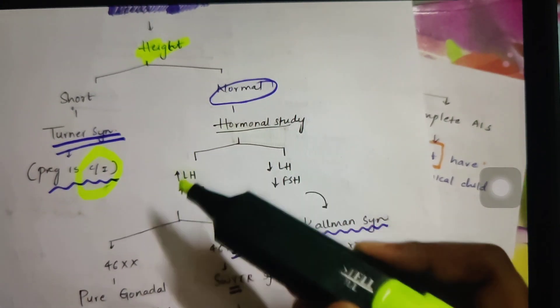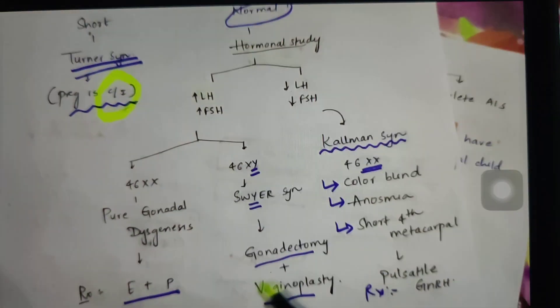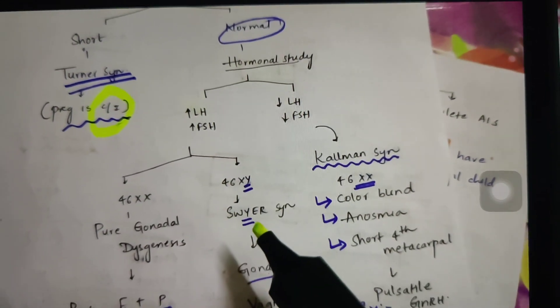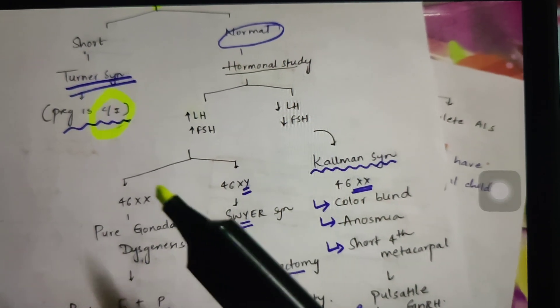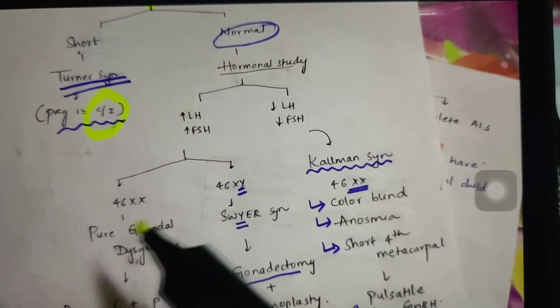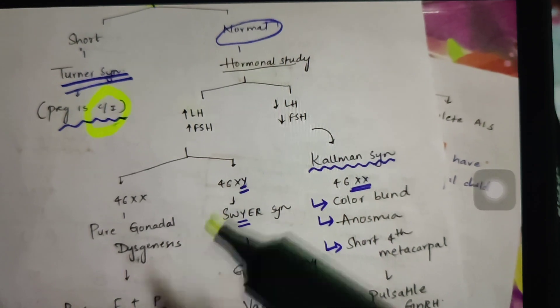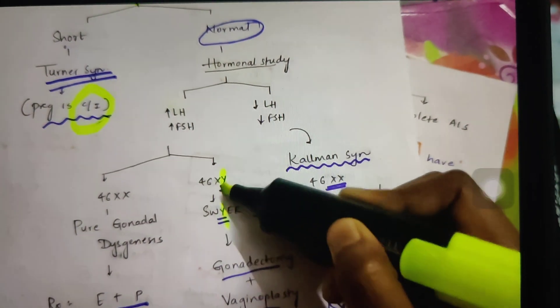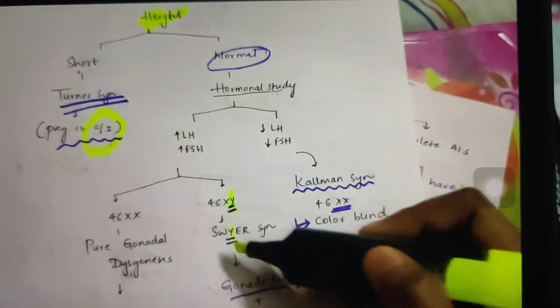If both LH and FSH hormones are increased, then narrow it down to pure gonadal dysgenesis or Swyer syndrome. So how to differentiate between these two conditions? We have to do karyotyping. 46XX is pure gonadal dysgenesis, whereas XY is Swyer syndrome. So you have Y in Swyer and XY. So remember it like that: Swyer syndrome is 46XY.